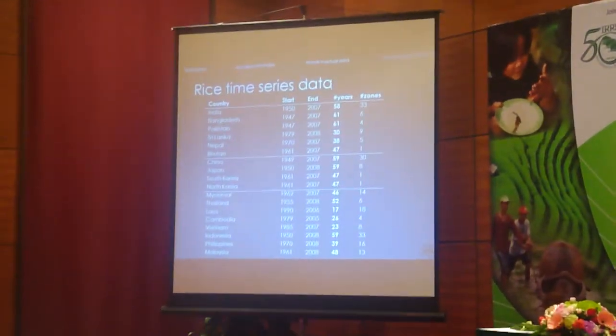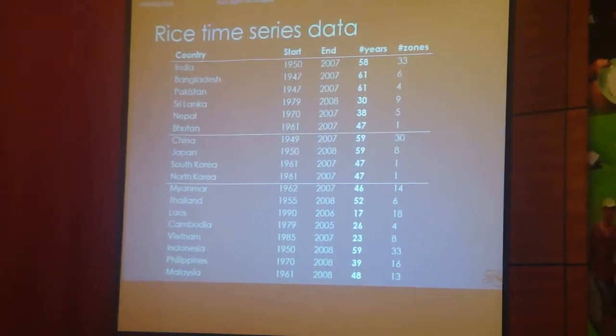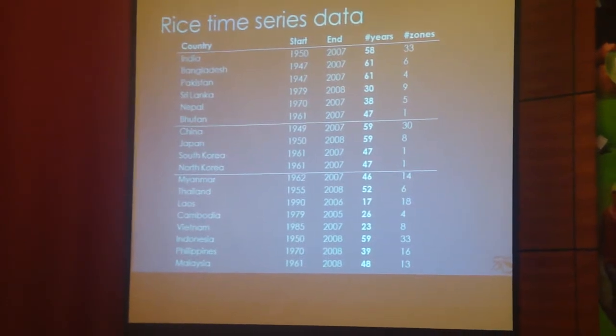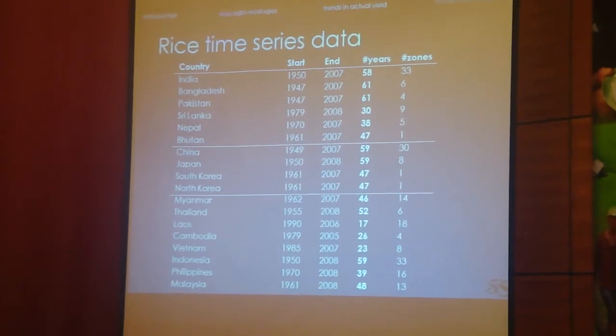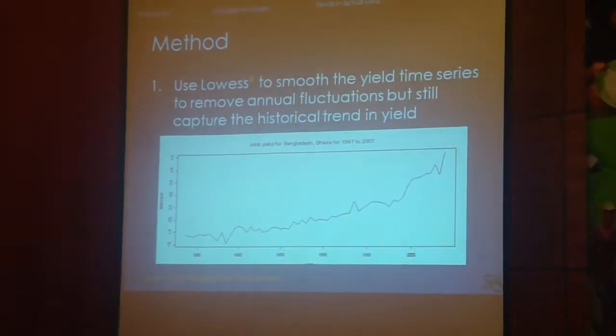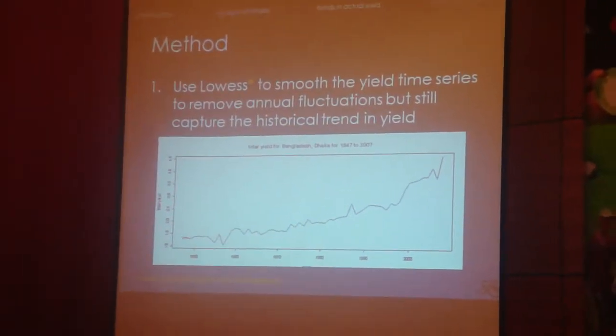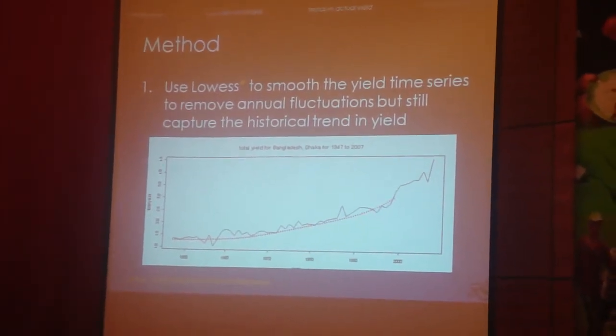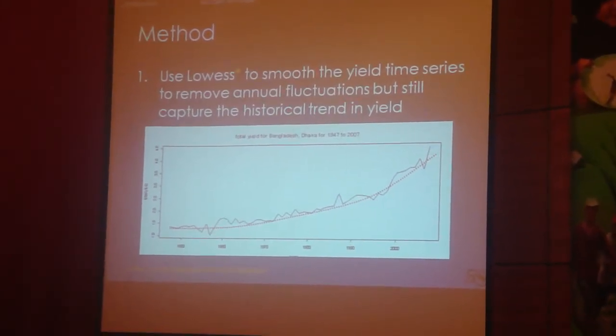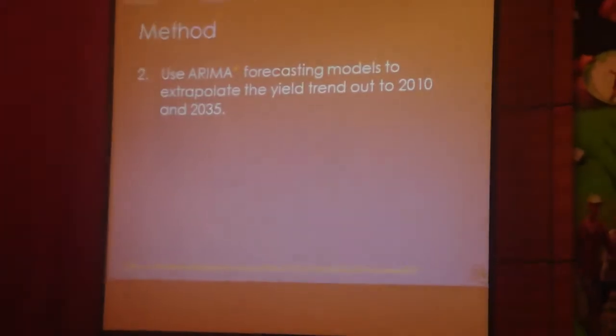We went back to our rice time series data, where IRRI along with its partners has collected a huge amount of information from different countries on rice production, area, and yield statistics — sometimes going back 50 or 60 years. This is our current spatial disaggregation. Using Bangladesh as an example over 50 years of rice yields, we use a LOESS method to smooth out the trend and capture what the rice yield trend has been over the last 50 years. Then we use ARIMA forecasting models to extrapolate that out to 2010. If we're lucky, we have current yields from 2007, 2008, or 2009, depending on how long it takes a country to publish official statistics, so we still have to estimate 2010 and then 2035.